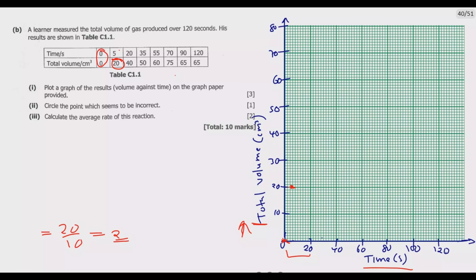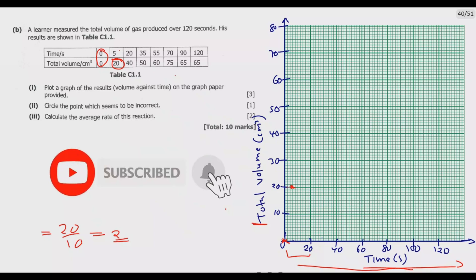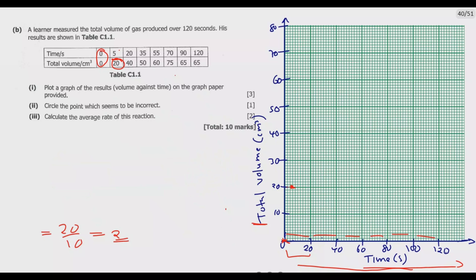Make sure you label your axes to maximize the graph space provided. If your graph paper is large, you can use 10-second intervals on the x-axis and increase the y-axis in intervals of 5. Ensure the graph is drawn to scale — the increments must be consistent. On the x-axis, increment by 20 each time; on the y-axis, increment by 10 each time. Consistent scaling prevents mistakes.